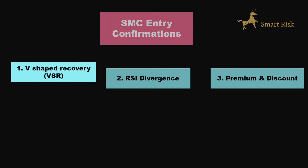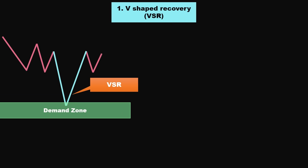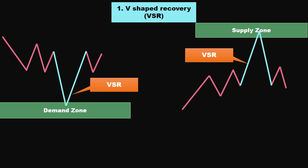So let's get started with the VSR. VSR stands for V-shaped recovery. The basic idea behind the V-shaped pattern is that when price approaches a demand zone, price may quickly fall and then rise back to its previous level and forms a V-shaped pattern. It's worth noting that the V-shaped pattern can also form when price rises quickly and then falls back down to its previous level in a supply zone, creating an upside-down V-shaped pattern.